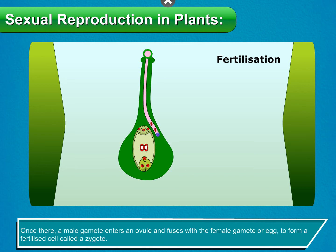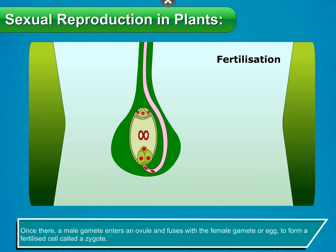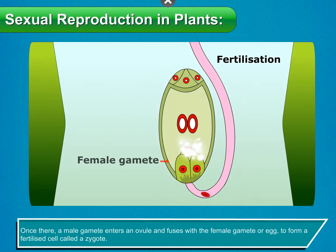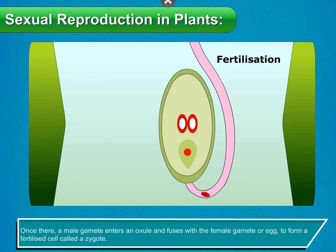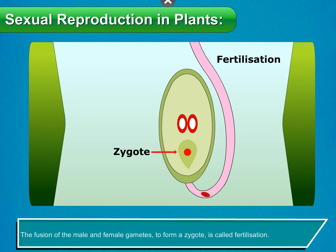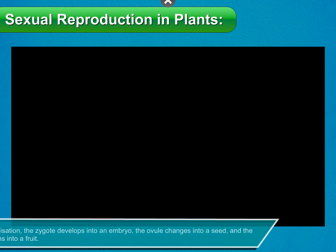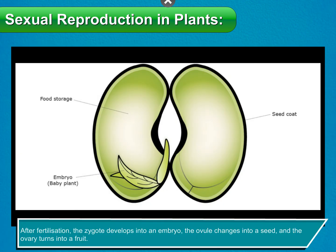Once there, a male gamete enters an ovule and fuses with the female gamete, or egg, to form a fertilized cell called a zygote. The fusion of the male and female gametes to form a zygote is called fertilization.